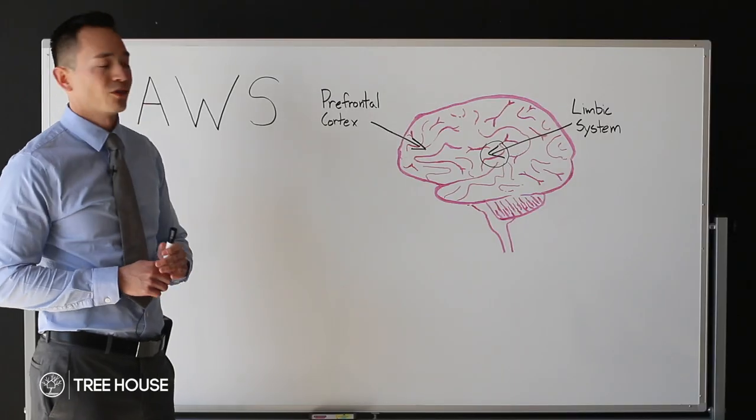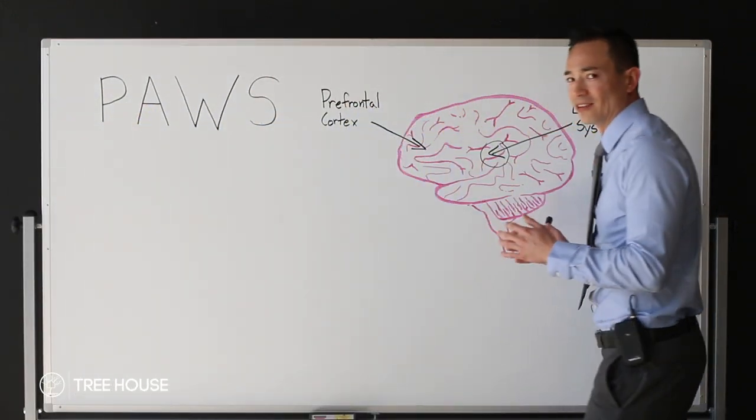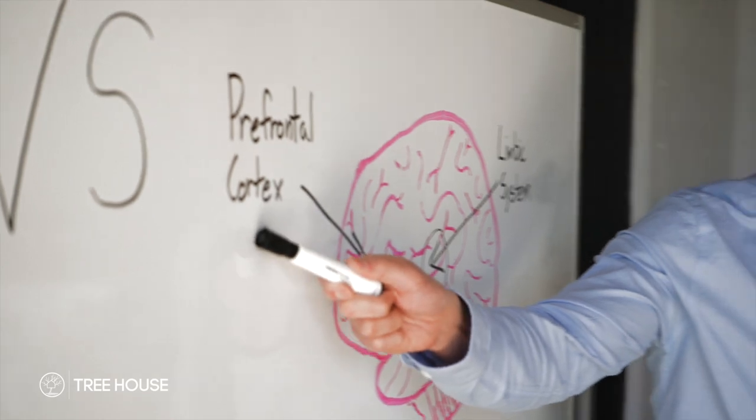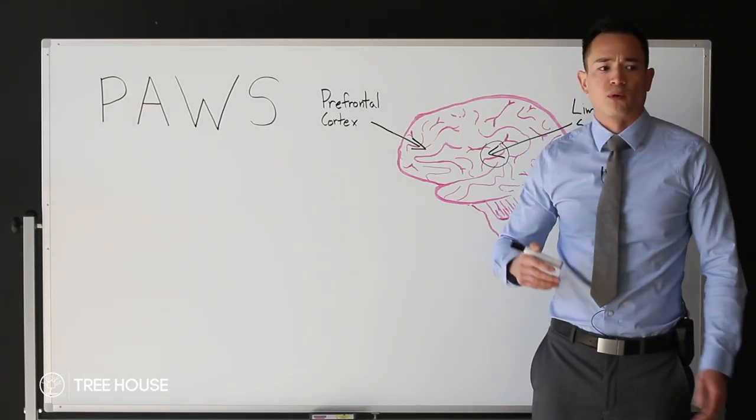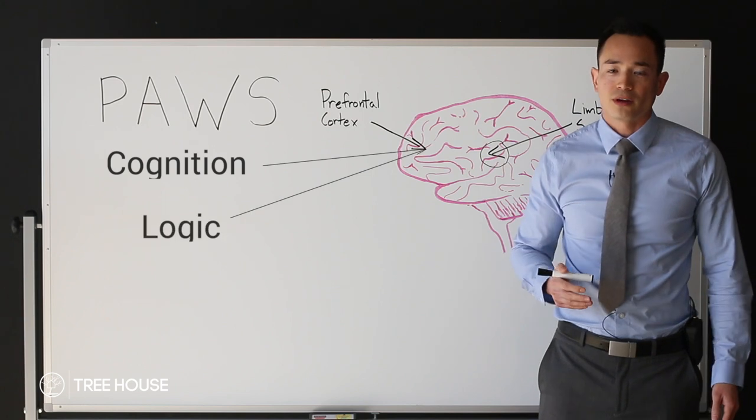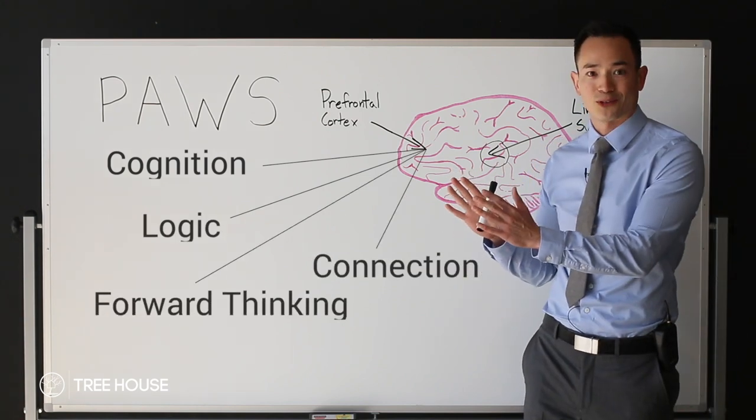To fully understand PAWS, we have to talk about the brain. For the sake of this lecture, we're going to be discussing the prefrontal cortex, which is primarily responsible for cognition, logic, forward thinking, and connection.